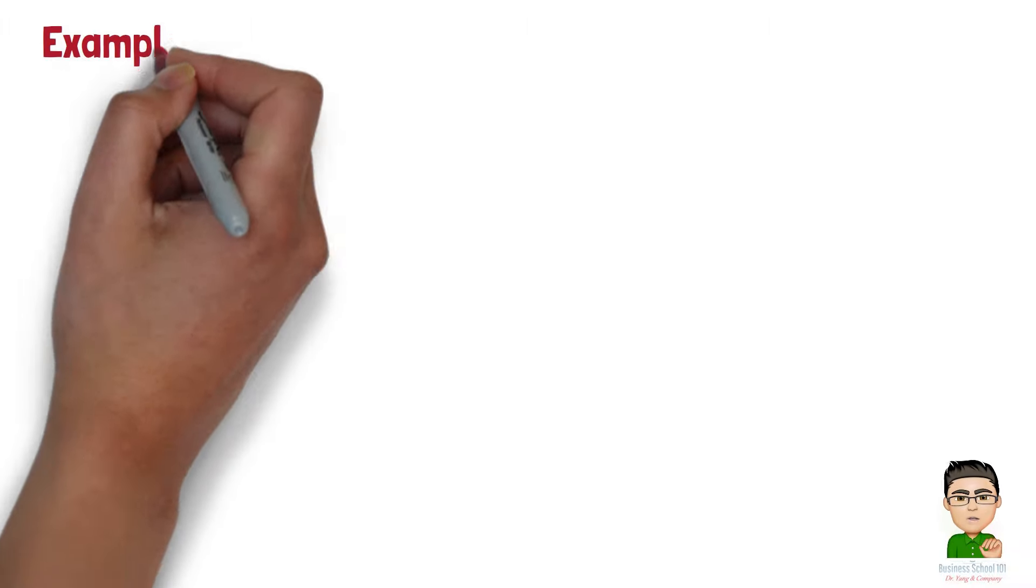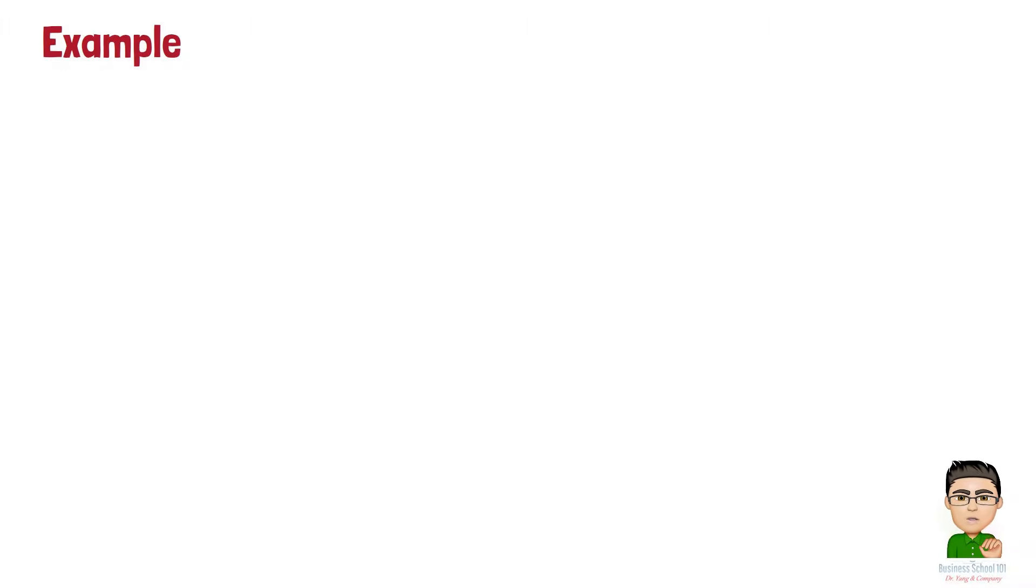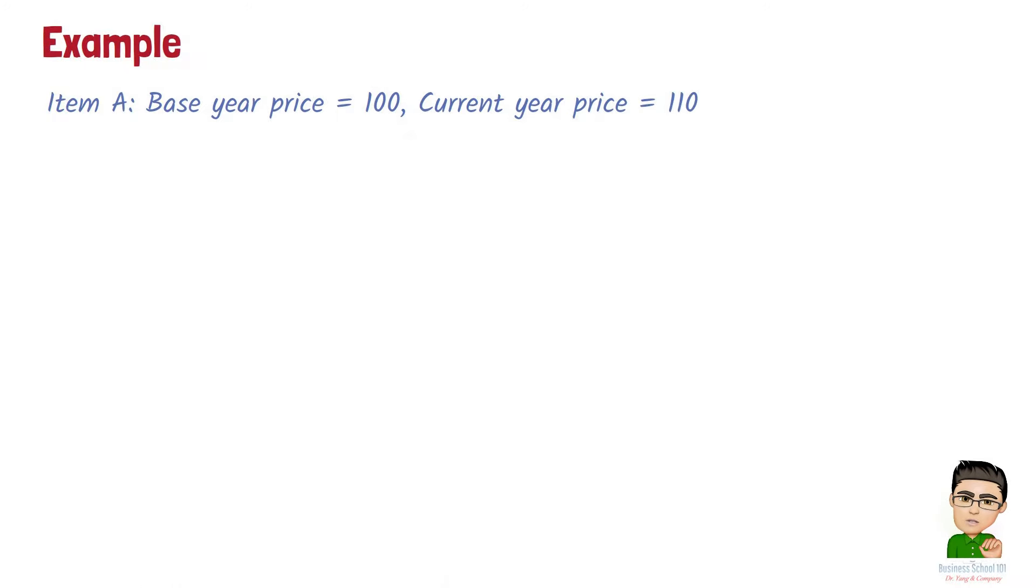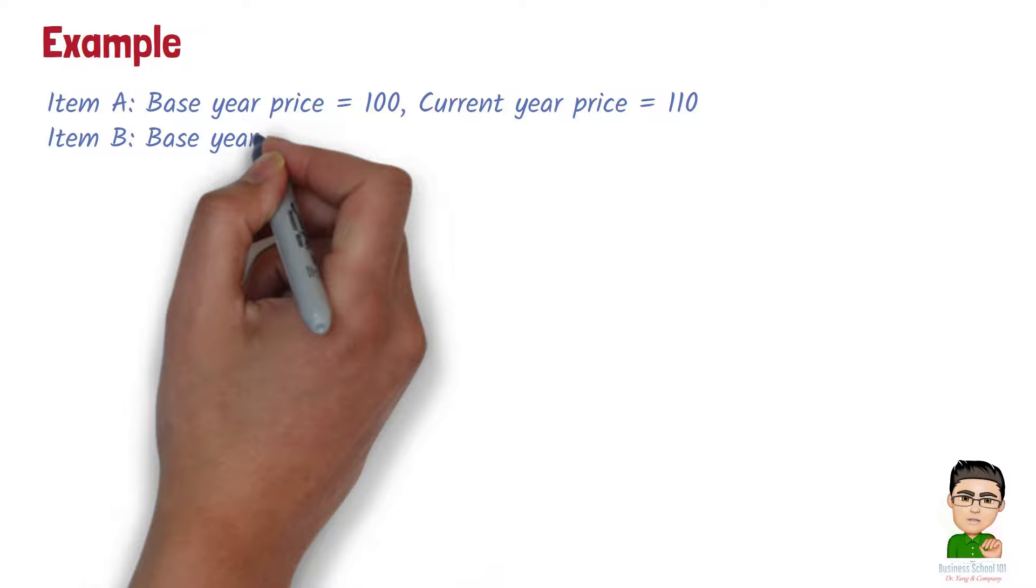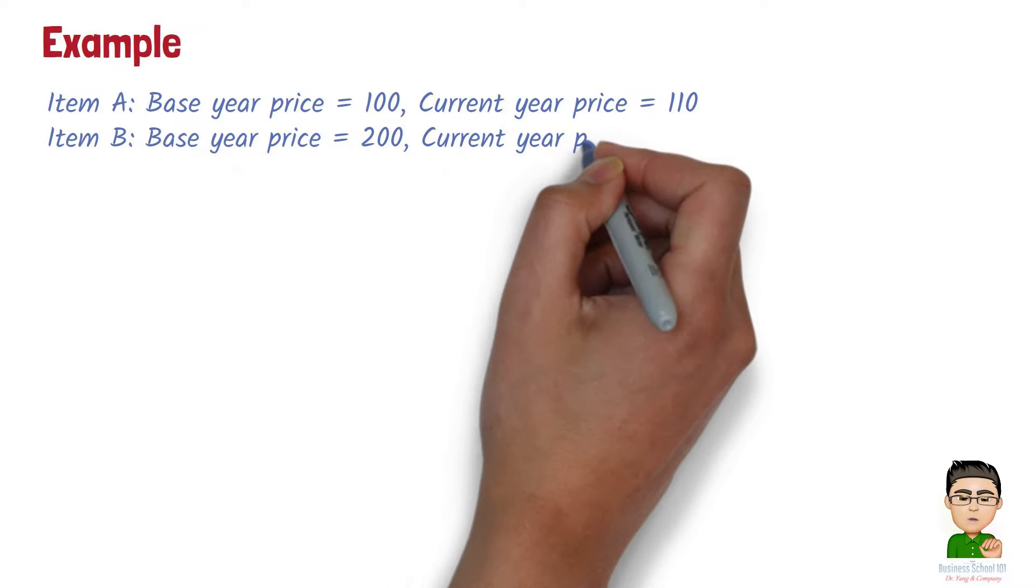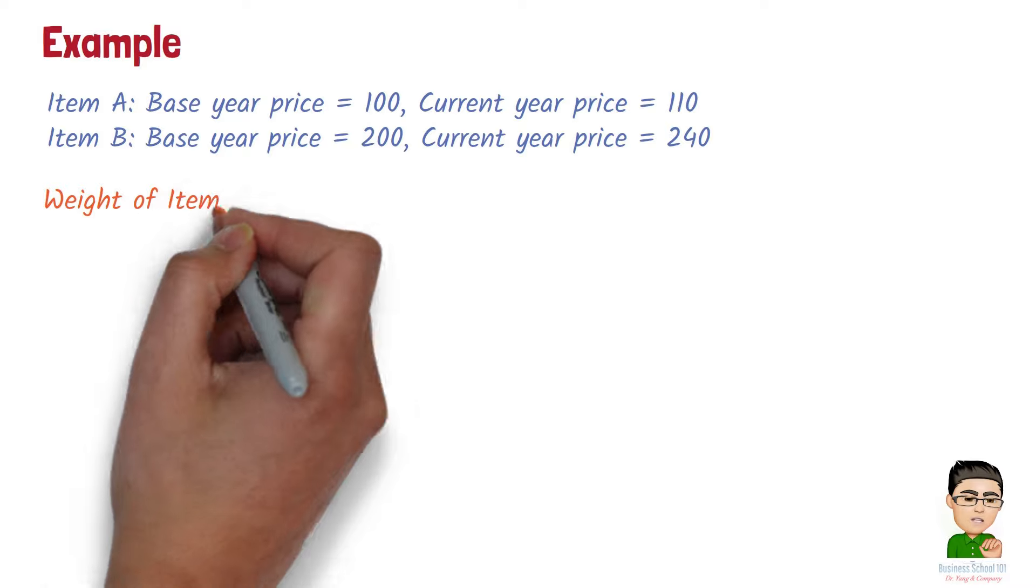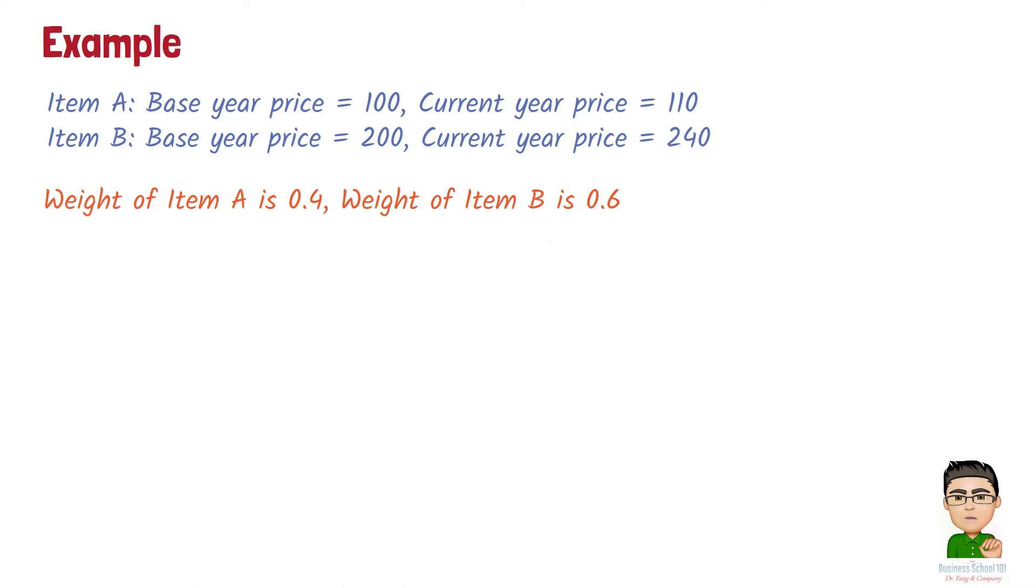For example, let's say we have a simple market basket with two items for the base year and current year. Item A: base year price equals 100, current year price equals 110. Item B: base year price equals 200, current year price equals 240. Now let's assume the weight of item A is 0.4 and weight of item B is 0.6.